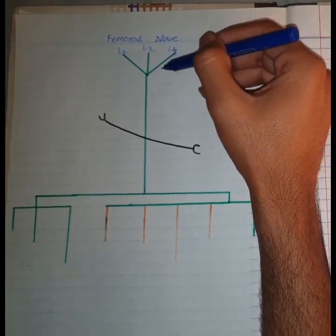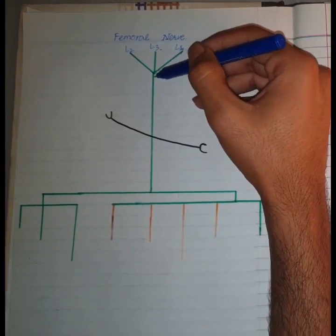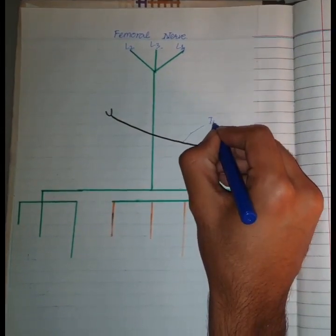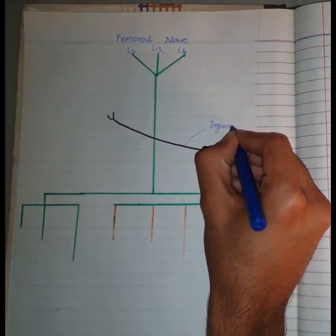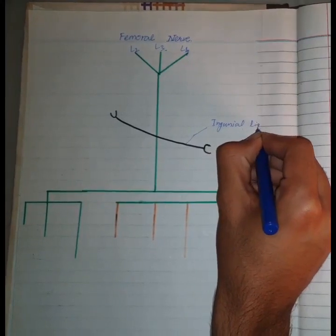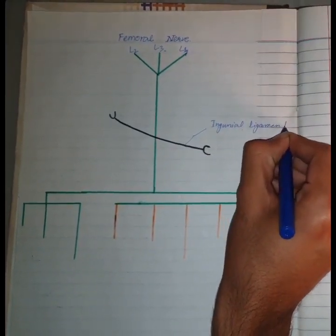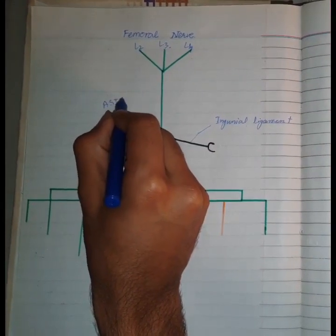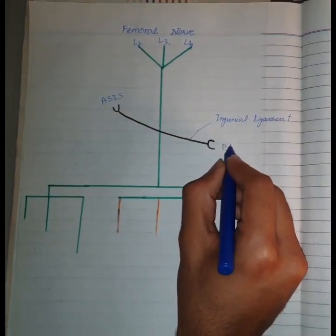It enters the thigh by passing behind the inguinal ligament. So this is the inguinal ligament. This is the anterior superior iliac spine and this is the pubic tubercle.